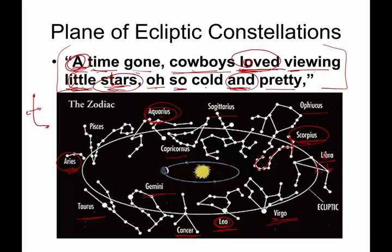Ophiuchus is the only O constellation. So cold. So Sagittarius for so. I don't have a good hint for so and Sagittarius. Capricorn. Capricorn for cold.